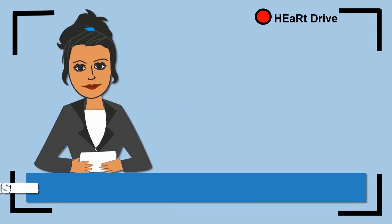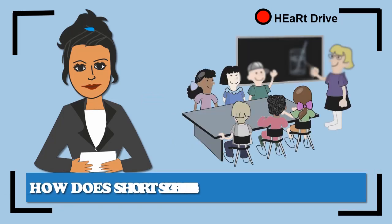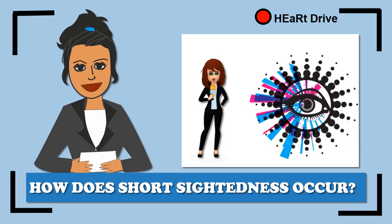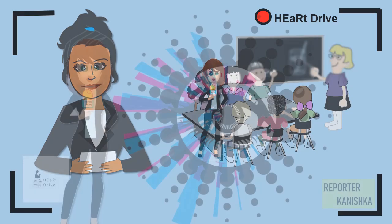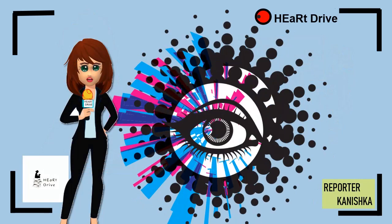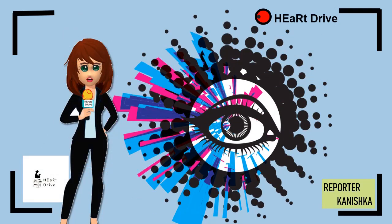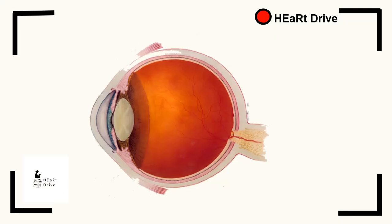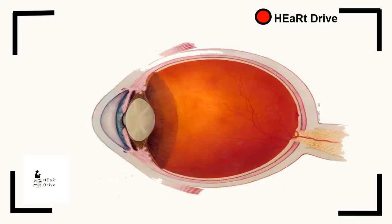Hi viewers, I'm Paul Vadhikto. How does short-sightedness occur? To report this fact, we have a reporter Kanishka. Hello everyone, this is Kanishka from Hard Drive. How does short-sightedness occur? When eyes grow long, short-sightedness occurs.